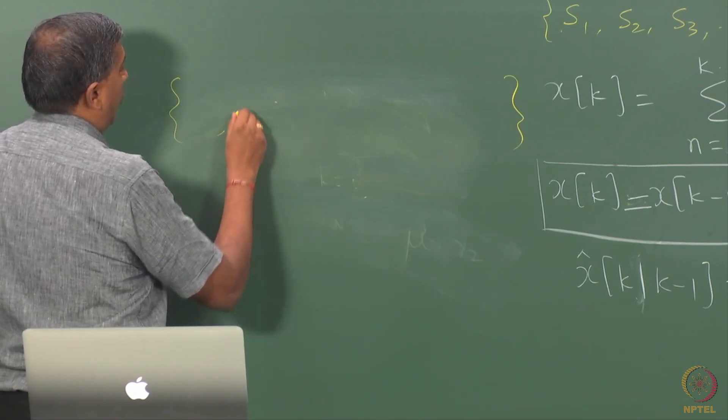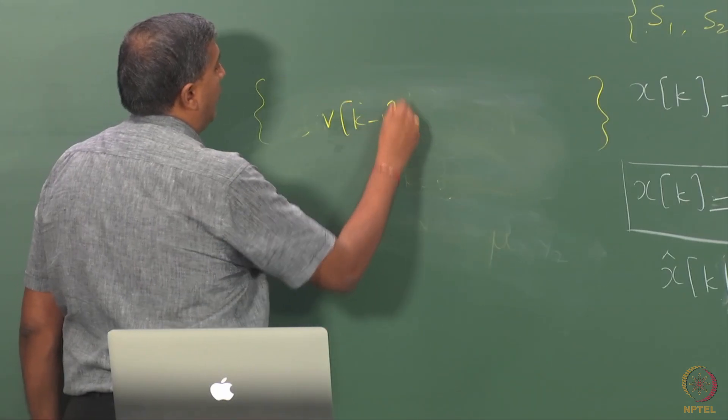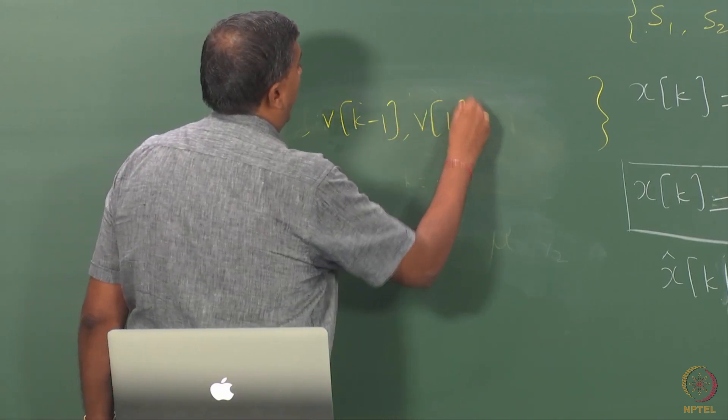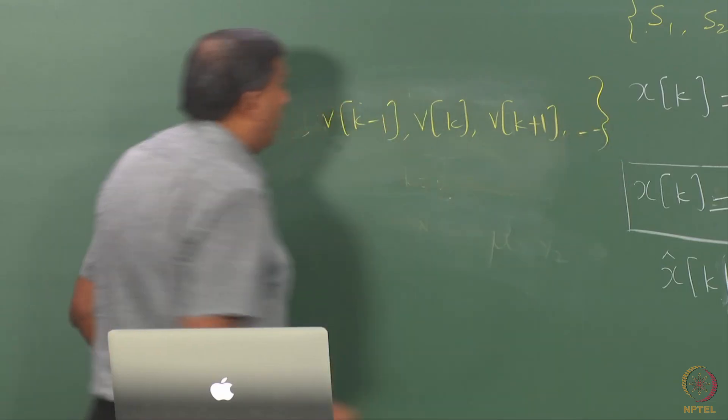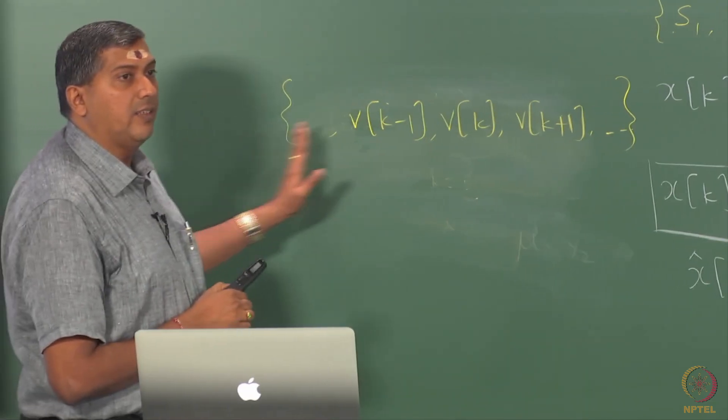Here you have, and now we will shift over to this v notation: v[k-1], v[k], v[k+1], and so on, and I would like to see if this series is predictable.